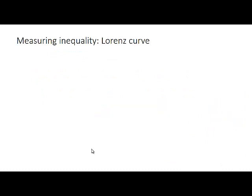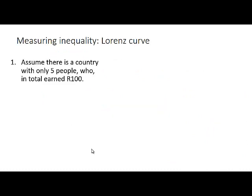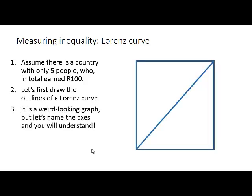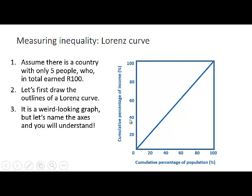Let's first look at the Lorenz curve. Assume there's a country with only five persons who in total earned 100 grand. This is a graph where we name the axes. On the vertical axis we show the cumulative percentage of income, and on the horizontal axis we show the cumulative percentage of population. We're going to show the cumulative percentage of income earned by the different groups.